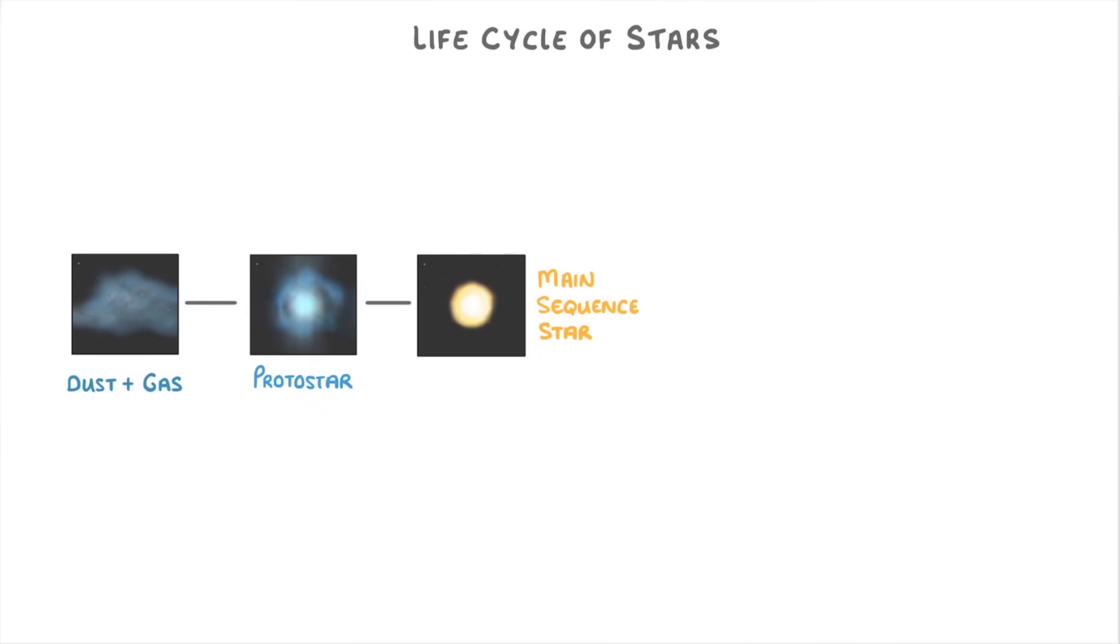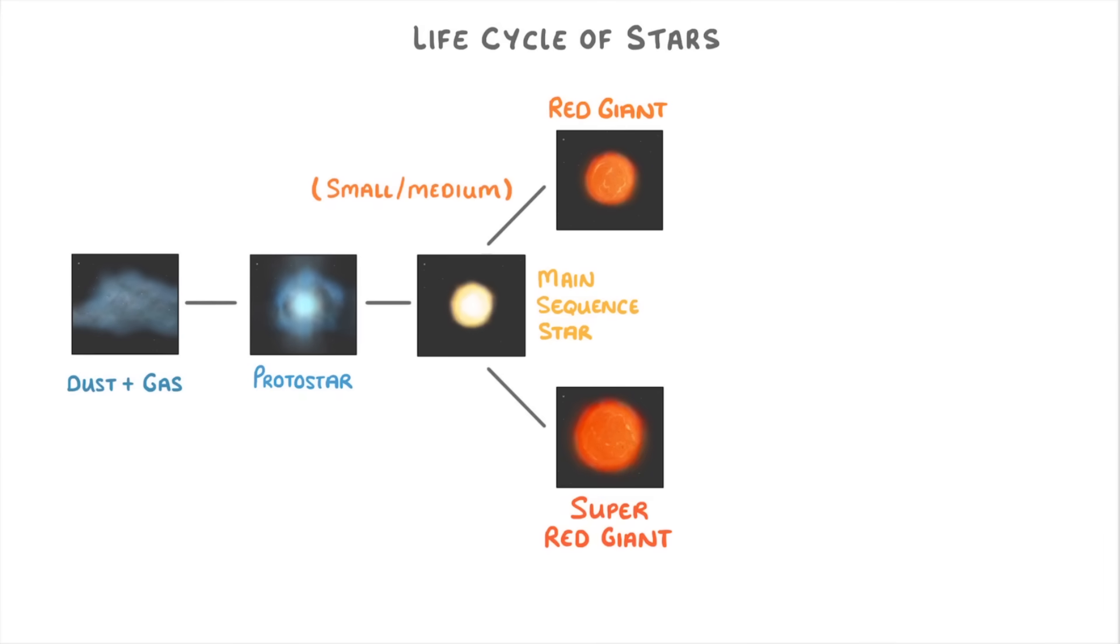After a long time, often billions of years, the star exhausts its hydrogen supplies and becomes either a red giant, if it's a small to medium size, or a red supergiant, if it's a big star.